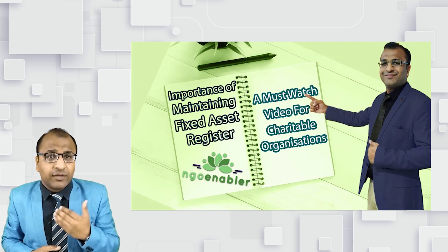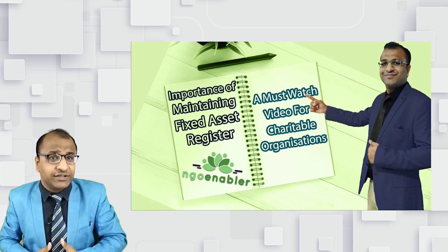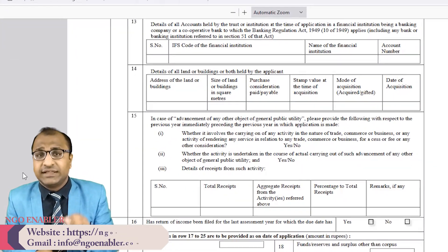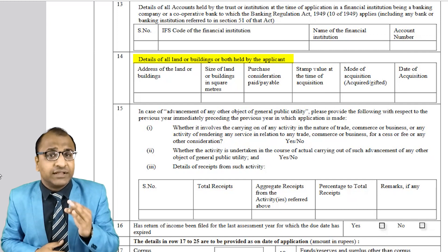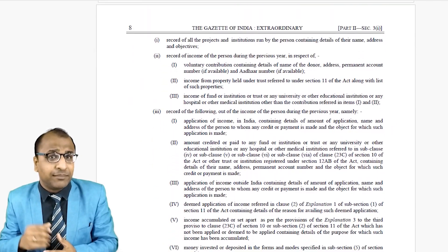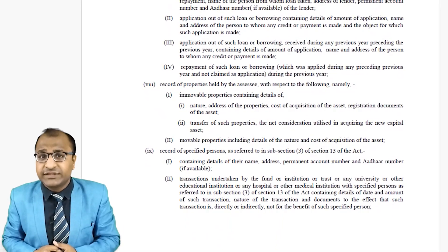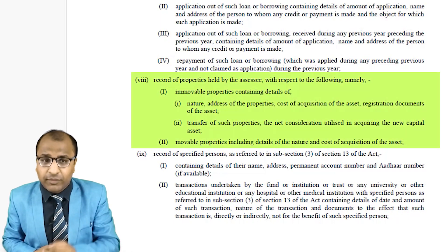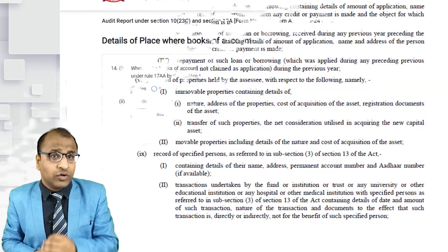We have been constantly telling you all from more than three years now about the importance of maintaining a fixed asset register. In fact, more than a year has passed since our video was published on this topic explaining the importance of fixed asset register for NGOs. Then, even while explaining Form Number 10AB, we again stressed upon having an asset register because the details of land and building — whether owned, leased, or rented by the organization — is being asked, along with the stamp duty value, the purchase cost of the asset, and the size of the land.